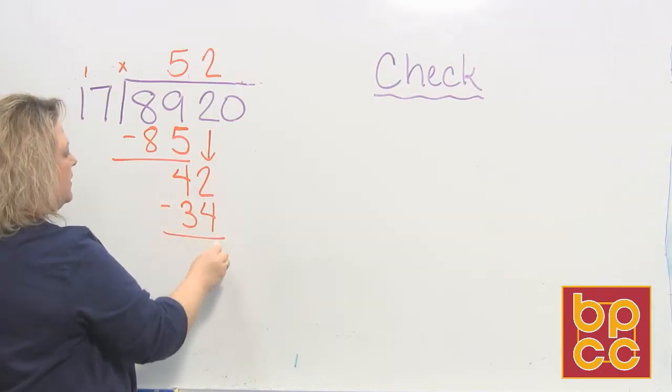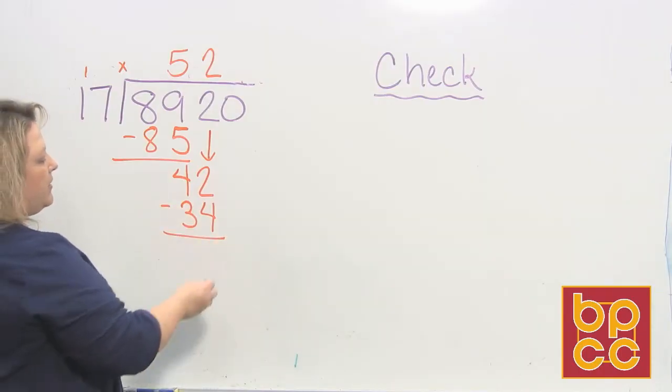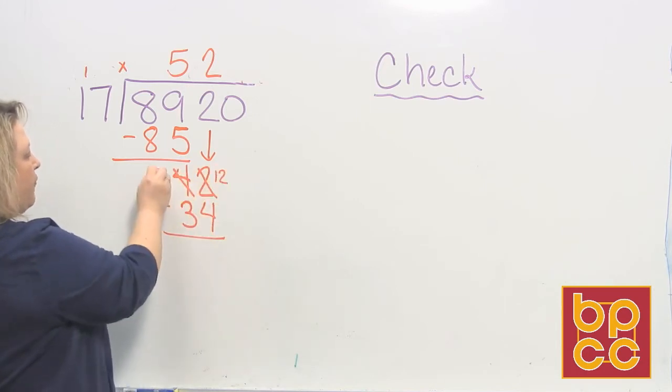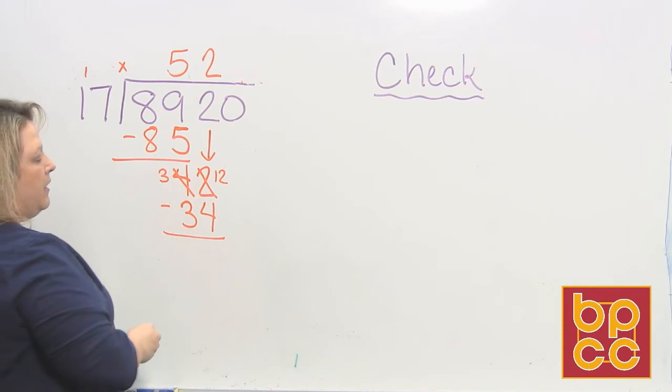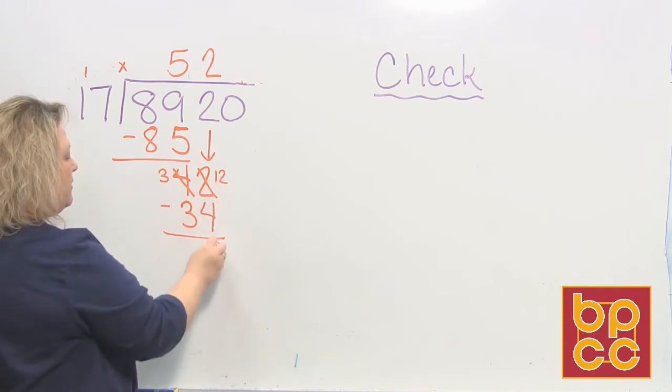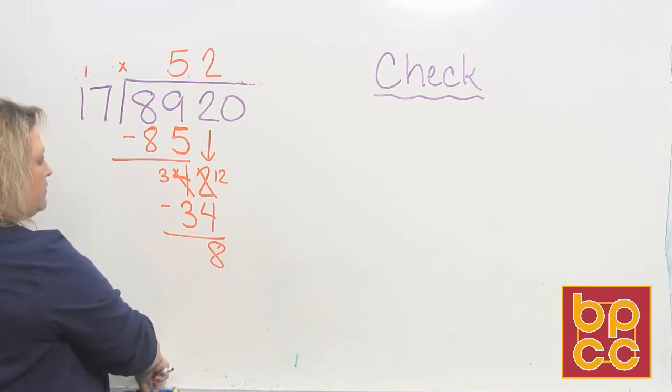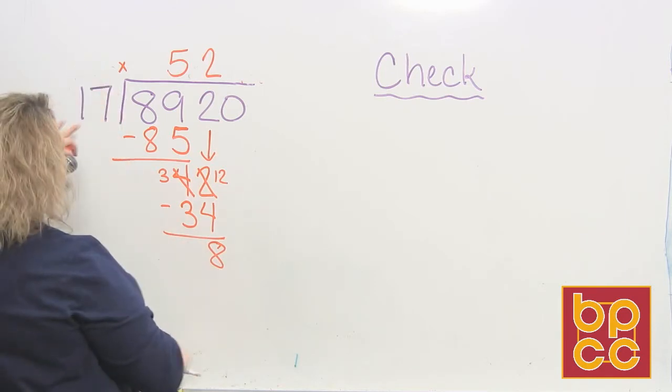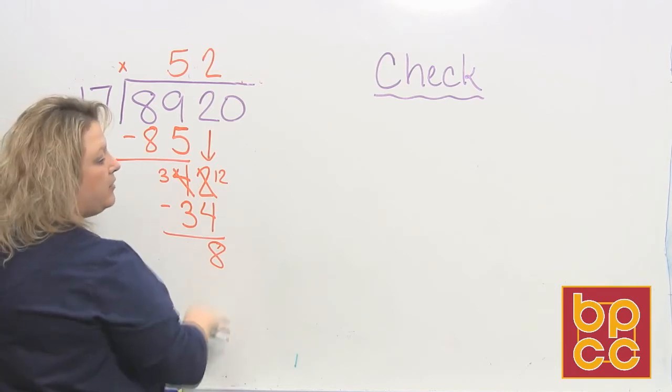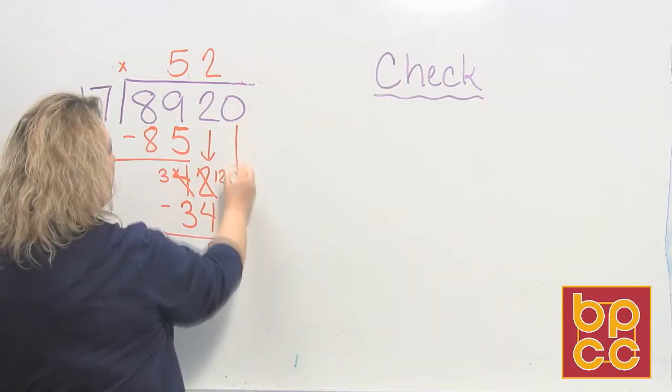And then I'm going to subtract. I have to borrow and make that a 12, and that 4 goes down to a 3, and then when I do my subtraction, 12 minus 4 is 8, 3 minus 3 is 0, so I don't need to put that there, and then I compare. Is my divisor, 17, bigger than 8, my remainder? Yes, it is. So I'm good to go.